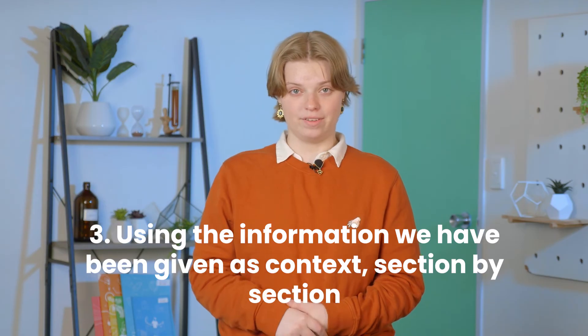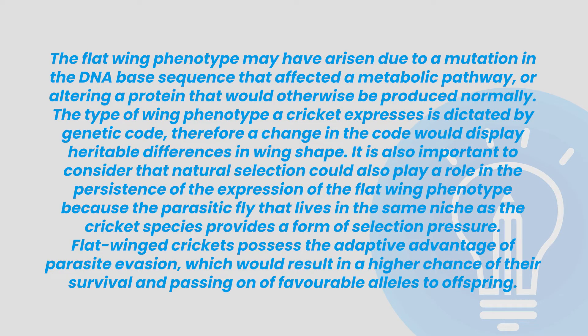Step three: using the information we've been given as context, section by section. We have a lot to work with now, so we can begin writing an answer. It's a really good idea to structure it similarly to the order of the bullet points. Beginning with the 'how' section: the flat-winged phenotype may have arisen due to a mutation in the DNA base sequence that affected a metabolic pathway or altering a protein that would otherwise be produced normally. The type of wing phenotype a cricket expresses is dictated by genetic code. Therefore, a change in the code would display heritable differences in wing shape. It is also important to consider the natural selection that could also play a role in the persistence of the flat-winged phenotype, because the parasitic fly that lives in the same niche as the cricket species provides a form of selection pressure. Flat-winged crickets possess the adaptive advantage of parasite evasion, which would result in a higher chance of their survival and passing on favourable alleles to offspring. We've covered selection and selection pressure, as well as mutations, and we've nicely unpacked and answered that 'how' section.